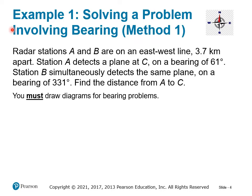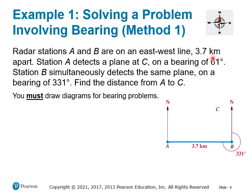When you read this you may not even know where to begin with a diagram. Like most things, start at the beginning: as soon as you get one piece of information, draw it and take your time. The first sentence says radar stations A and B are on an east-west line 3.7 kilometers apart — just a horizontal line like the x-axis with point A on one end, point B on the other, 3.7 kilometers apart. Since we're dealing with a bearing problem, we draw north lines at both A and B.